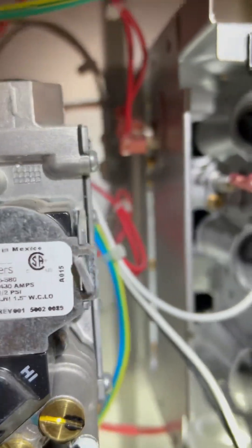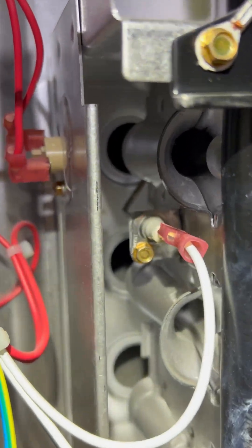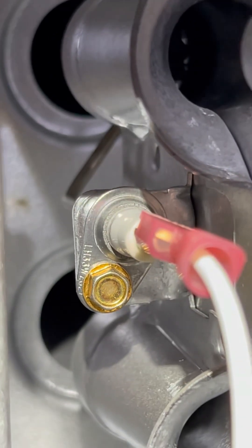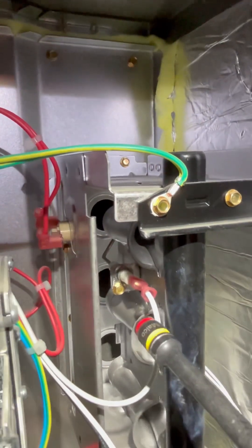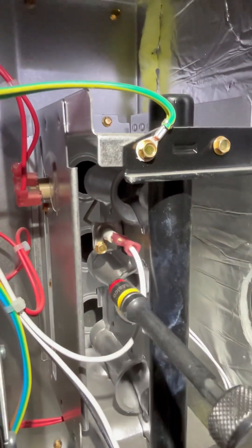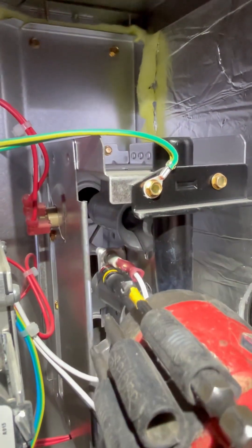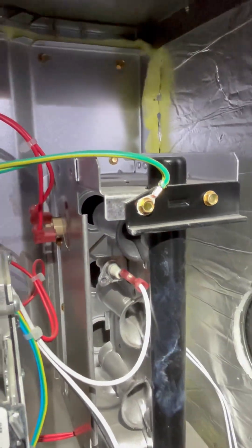Next, flame sensor. Second most likely issue. It's going to be a little rod inside your burner cabinet that looks like that. Usually it just needs a little cleaning. Use a quarter inch driver on most systems to take that one out of there. Not too bad.